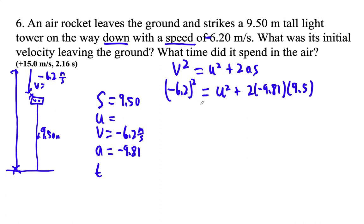So we solve this. 6.2 squared, and then I'm going to subtract this term. So minus 2 times negative 9.81 times 9.5, and then I'm square rooting that, and I get that the absolute value of U is 14.994.